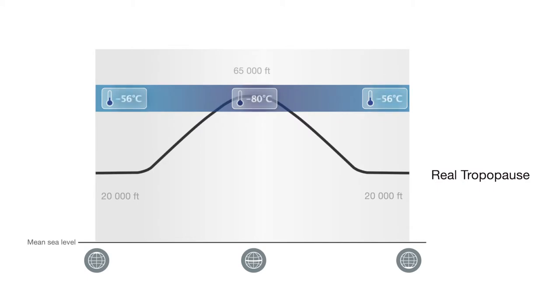The consequence is that the equatorial tropopause temperature of about minus 80 degrees C is much colder than the polar one at around minus 50 degrees C.